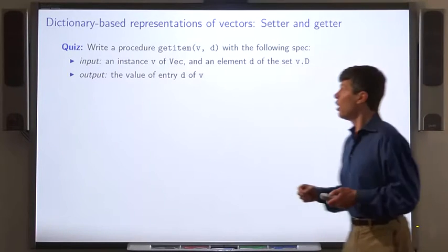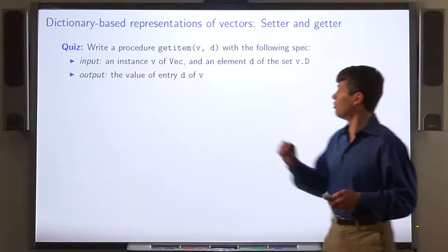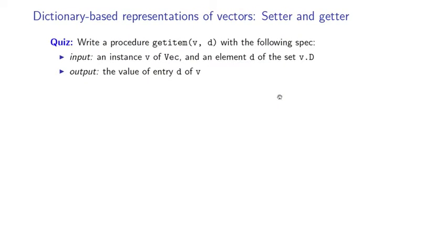Here's a quiz. Write the corresponding get item procedure. It takes a vector V and a domain element D. And it outputs the value of entry D of the vector V. Here's the answer.